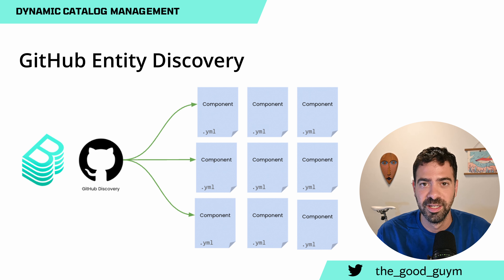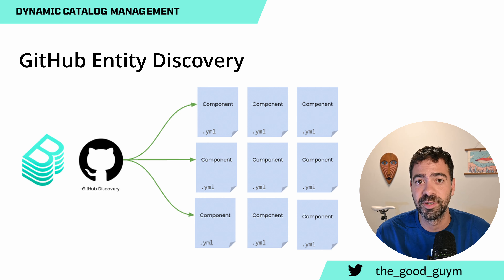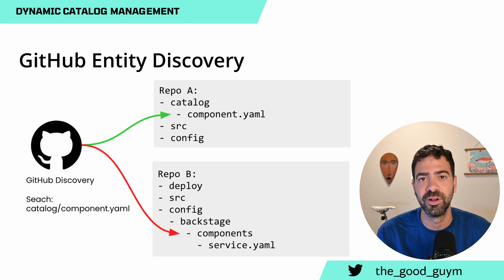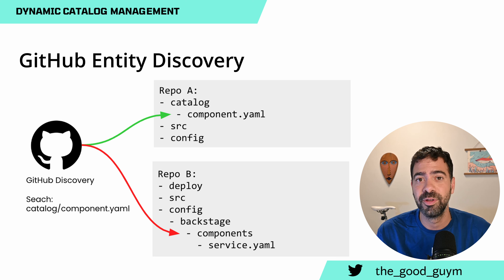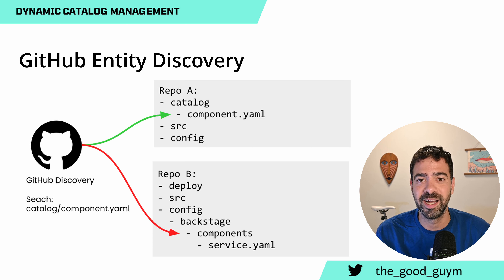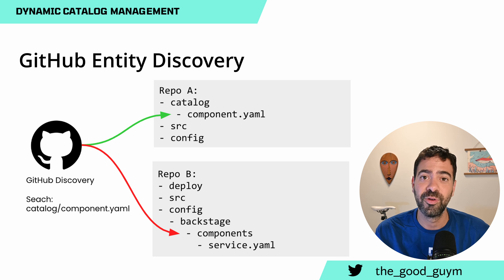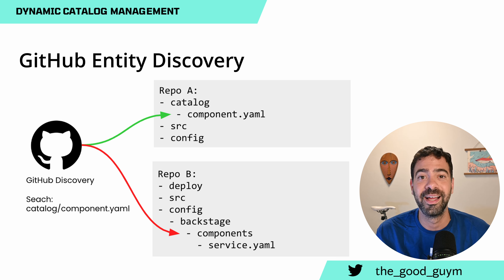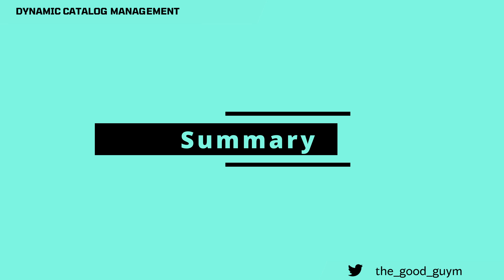Git Entity Discovery will do all of that for you using a simple configuration. However, it does require that your Git repositories be well-structured — for example, having a catalog directory in each repo. If you can't manage that consistently, it can be a problematic solution. You need to ask yourself what is already defined in your repos and how you can tie it into this crawler. It's a great and dynamic configuration option if you're using GitHub.